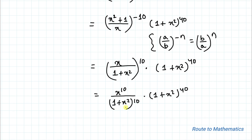Here we have (1 + x²) in the denominator and (1 + x²) in the numerator as well, so the powers get subtracted. This gives us x^10 multiplied with (1 + x²)^30. We now have a simplified expression.